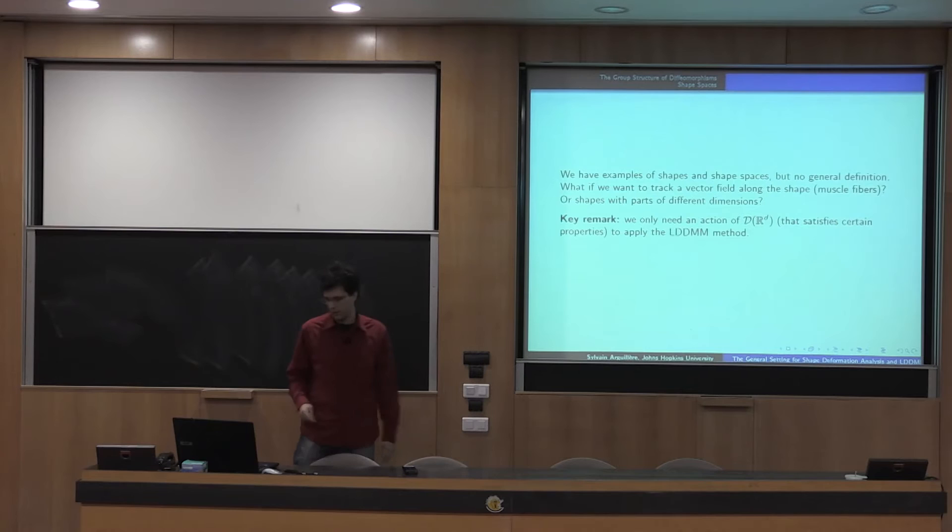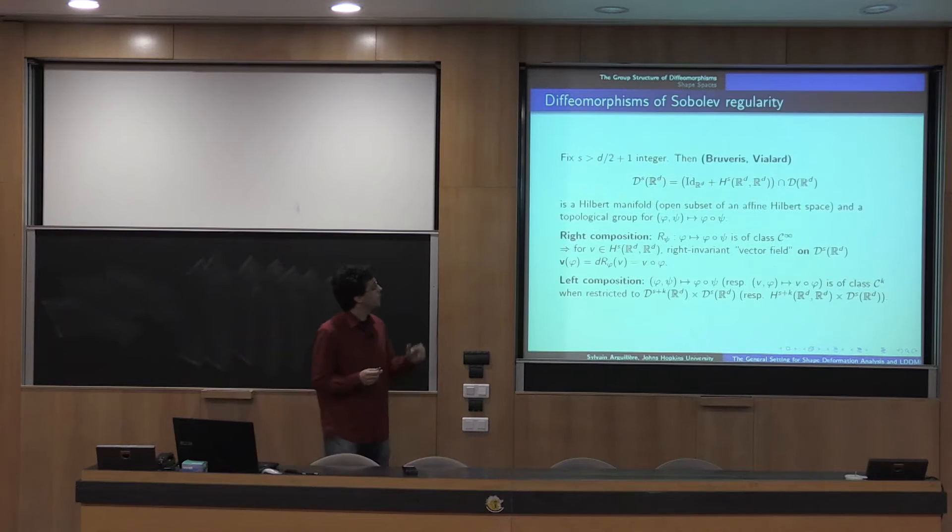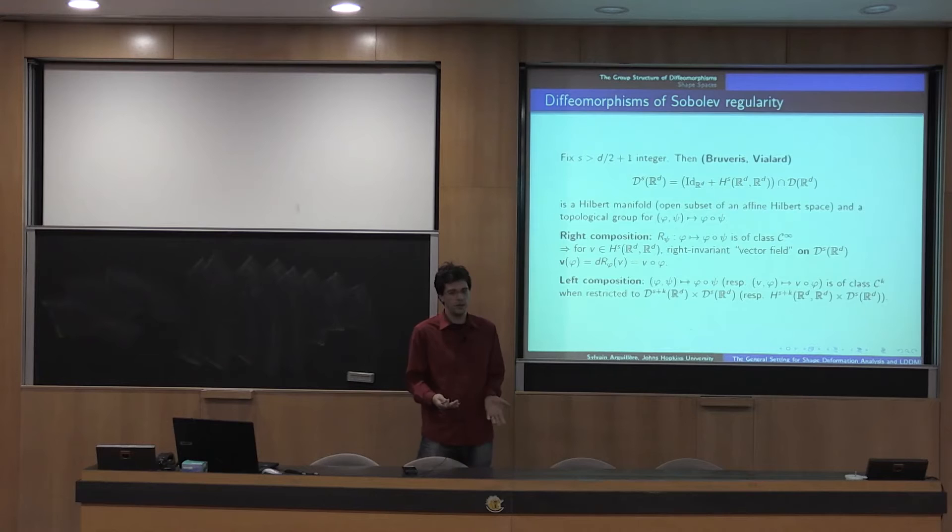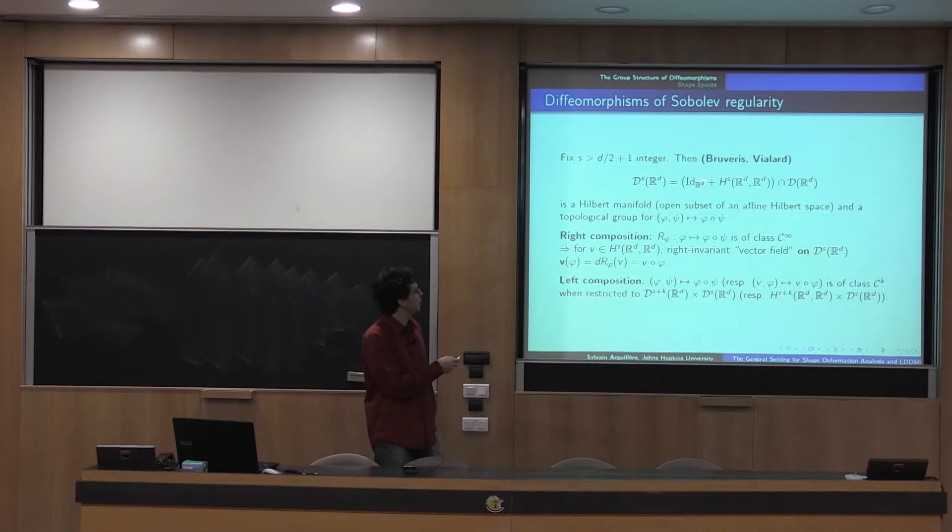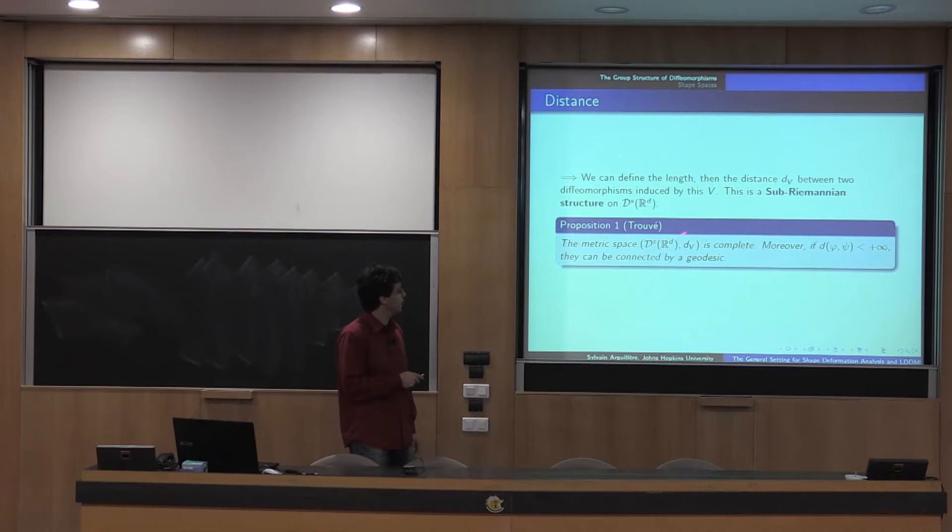All right, so the group of diffeomorphisms, so I'm going to consider mainly diffeomorphisms of Sobolev regularity, and more precisely the connected component of the identity of the diffeomorphisms of Sobolev regularity. So in other words, diffeomorphisms that can just be written as identity plus some HS vector field, where HS is the Sobolev space. So that's a Hilbert manifold because it's just a subset of, we have this theorem by Trouvé that the metric space is complete, and moreover, if two diffeomorphisms can be joined by a curve, then they actually can be joined by minimizing geodesic. So that's a nice first step.